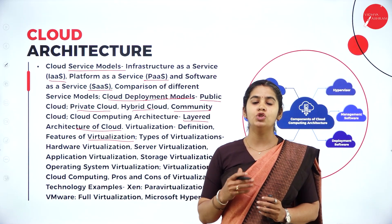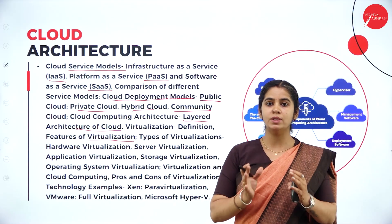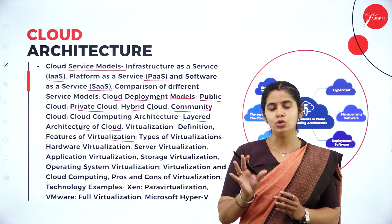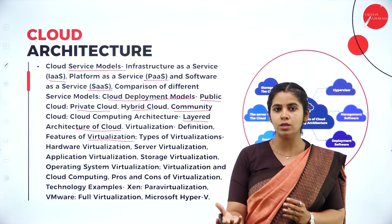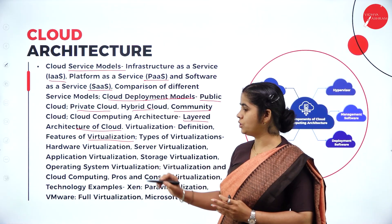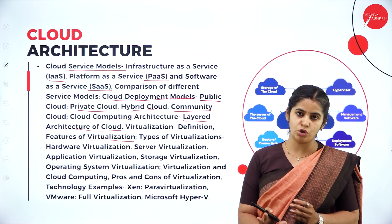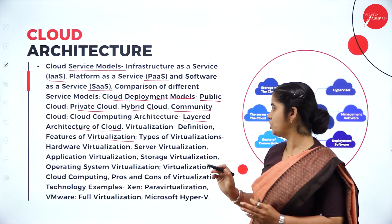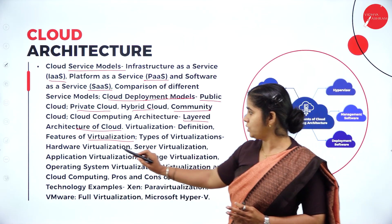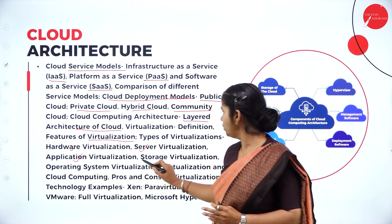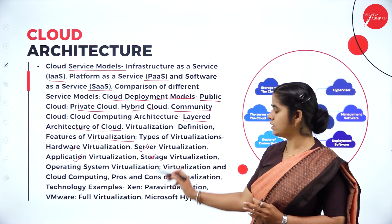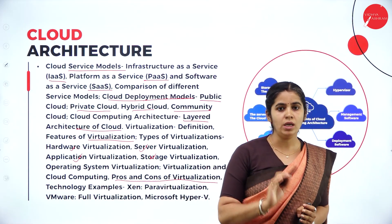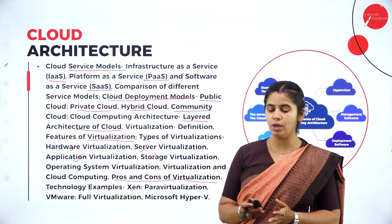Then virtualization. Virtualization is nothing but creating a virtual machine. When we are sharing resources, we cannot share physical resources directly with many people. So what they do is create virtual machines, and using those virtual machines they give resources to the users. The process of creating a virtual machine is called virtualization. We will discuss its definition, features, and the types of virtualization: hardware, server, application, and storage virtualization. We will also discuss the pros and cons of virtualization — the advantages and disadvantages of having virtual machines.